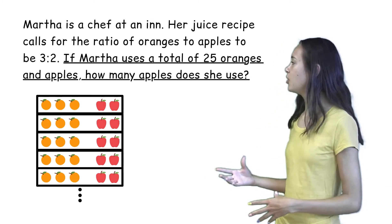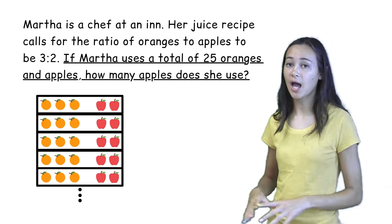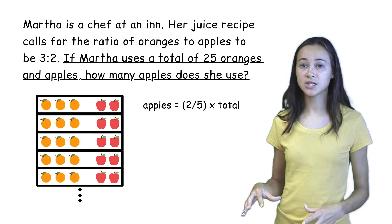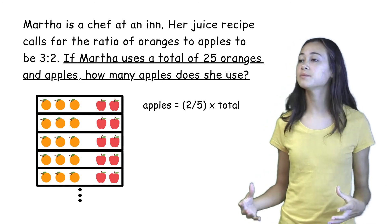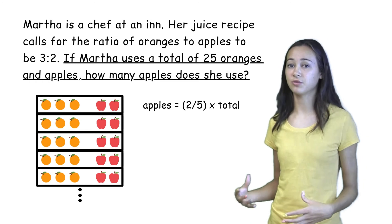Based off this picture, we can see that no matter how many groups Martha uses, the number of apples will always be two-fifths of the number of fruits.